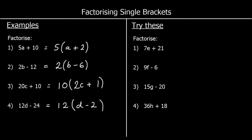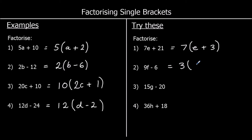Okay, four questions for you to try — pause the video and give them a go. Question 1: 7e plus 21. 7 and 21 are both in the 7 times table, so we take 7 outside. 7 times e makes 7e and 7 times 3 makes 21. Question 2: 9f minus 6. 9 and 6 are both in the 3 times table so we take 3 outside. 3 times 3f makes 9f and 3 times negative 2 makes negative 6.